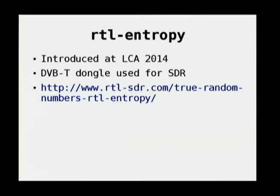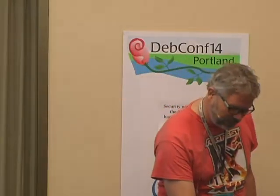At LCA earlier this year there was a discussion of RTL entropy — really interesting — using a DVB dongle with software-defined radio as a source of entropy. One thing we should do when we have good sources of randomness we can really trust is have secure ways of mixing the sources together, because that actually increases the quality of the randomness. There are cryptographic ways of doing that — fairly straightforward.